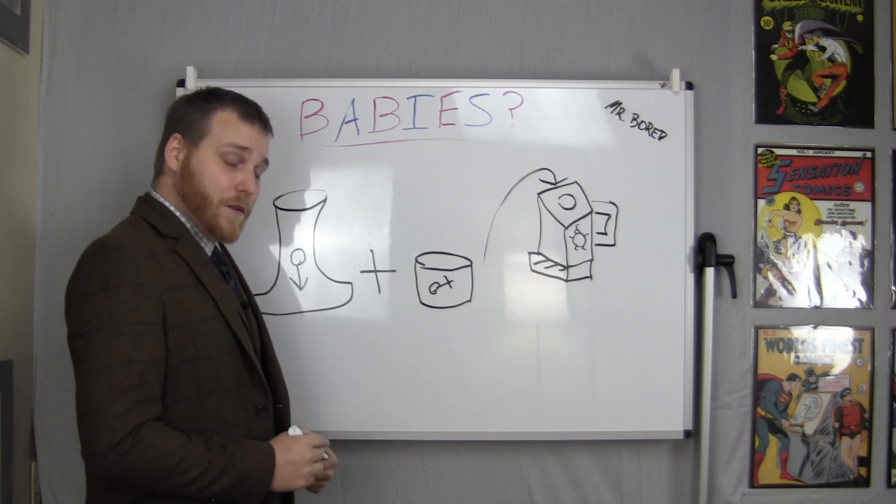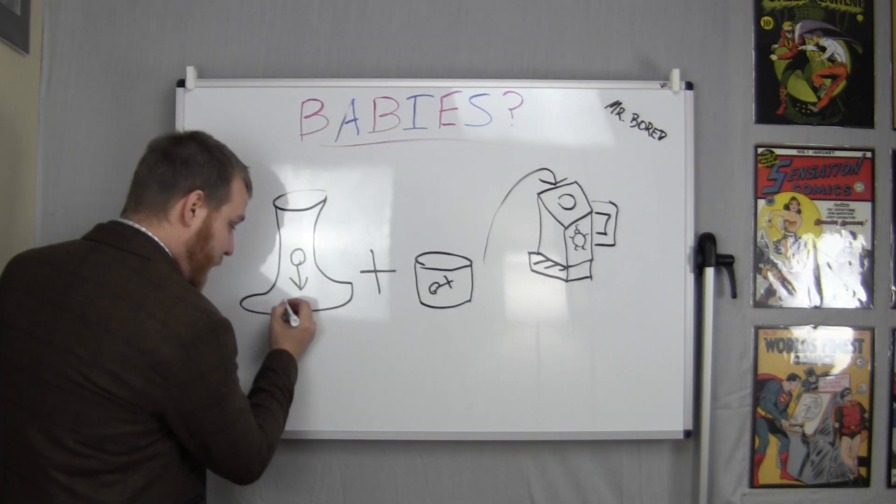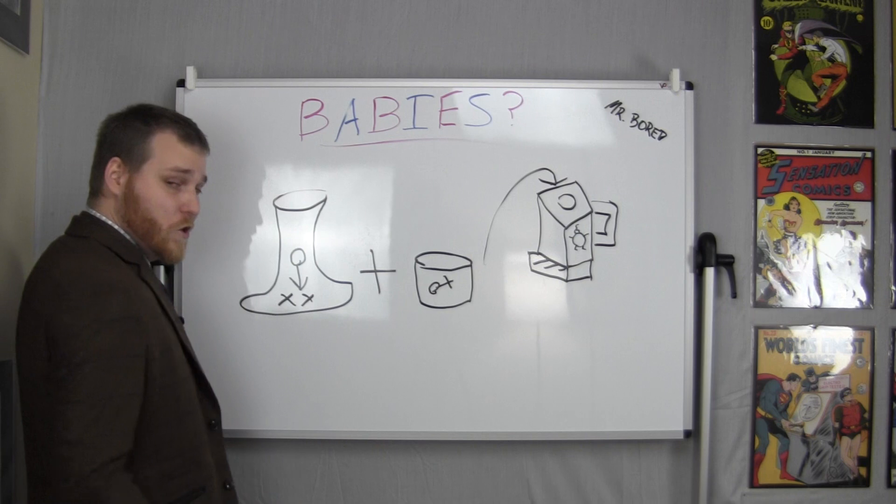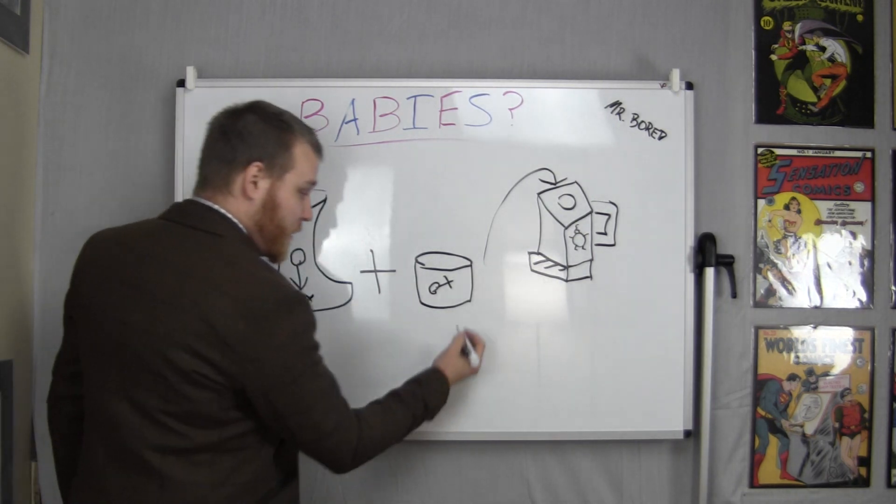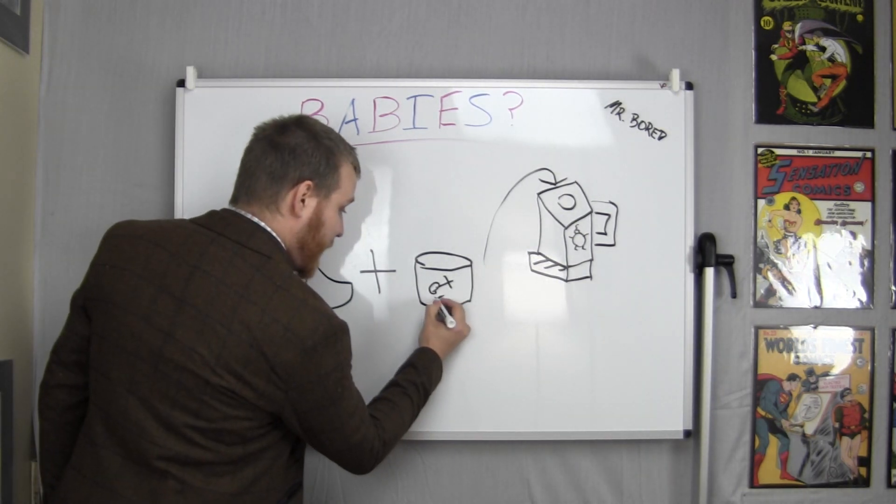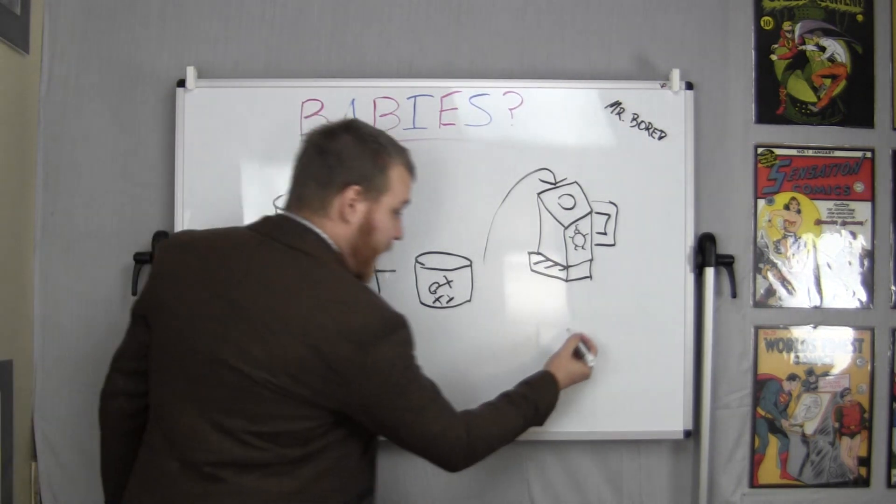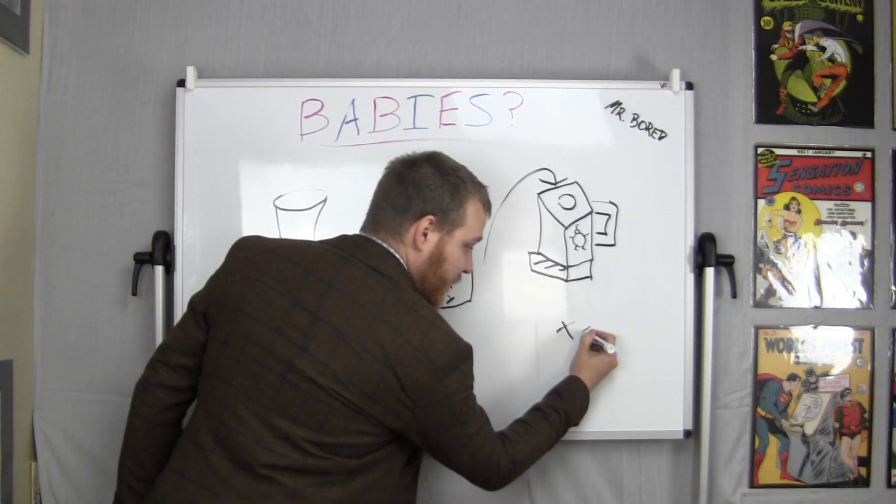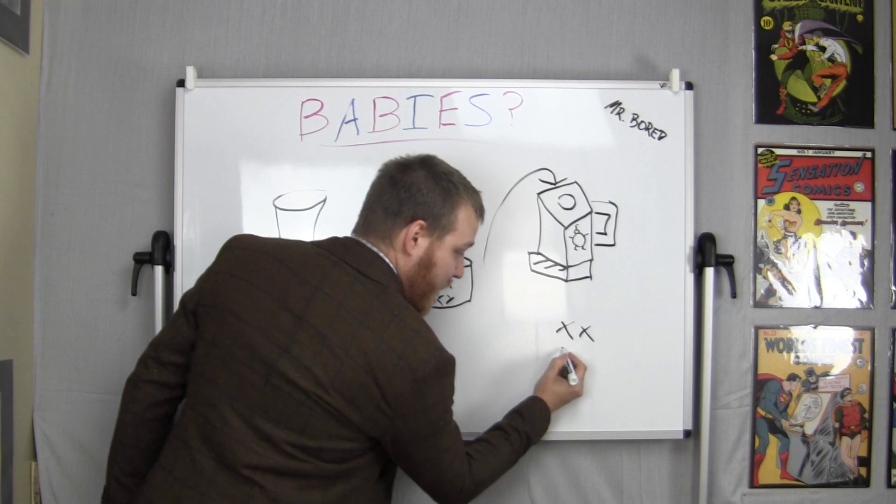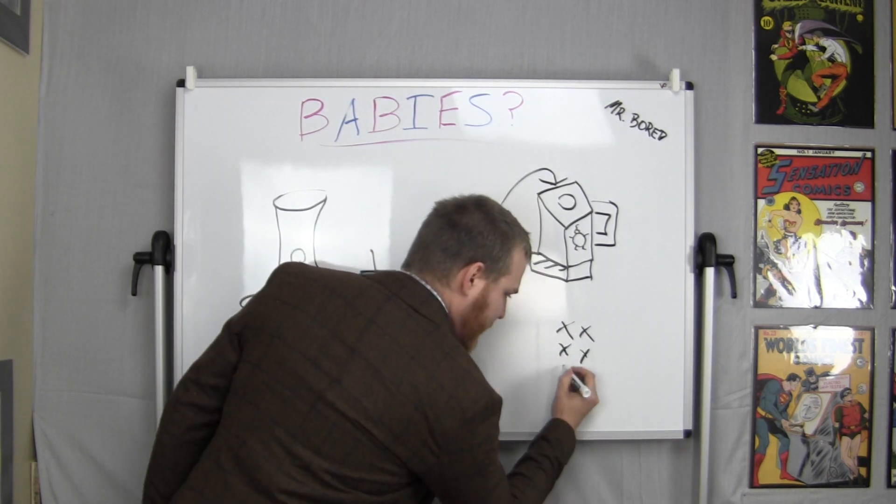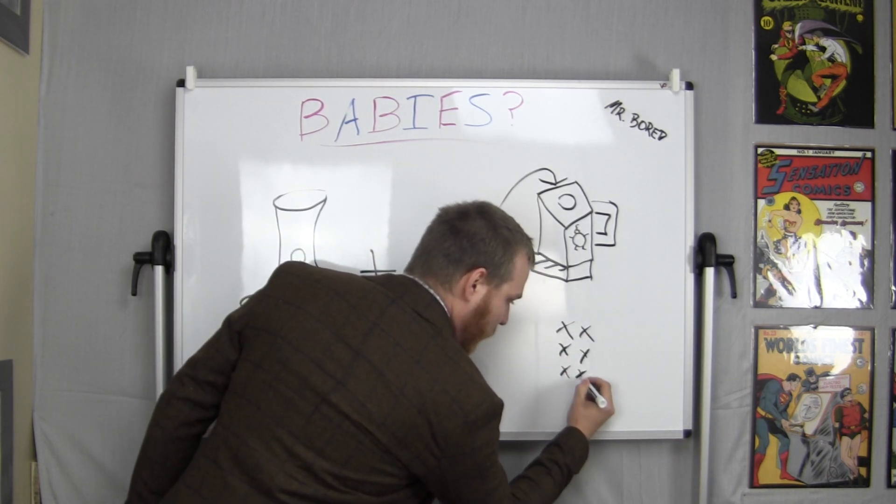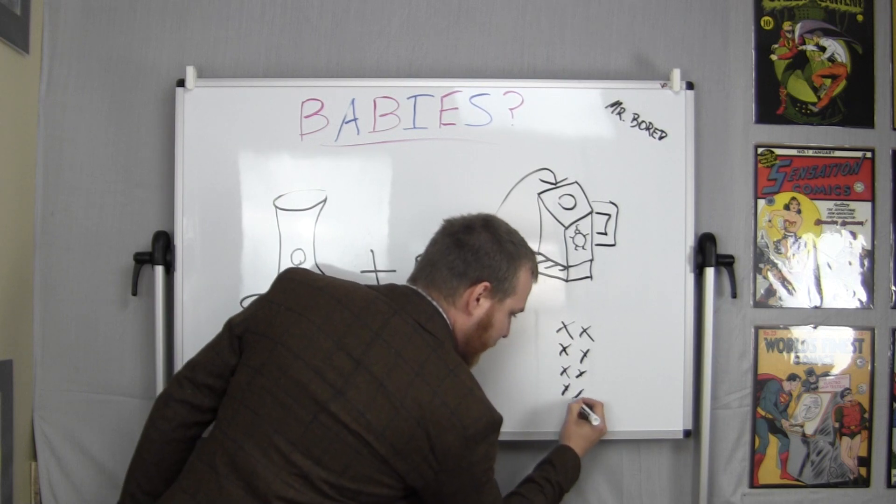Now, let's move on to how the gender is selected. In component number one, you have two X chromosomes. And in component number two, you have an X and a Y chromosome. Now, you have a combination of XX, XY, YY, and YX.